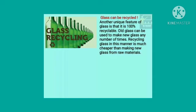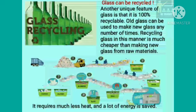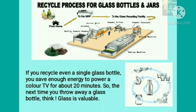Glass can be recycled. Another unique feature of glass is that it is 100% recyclable. Old glass can be used to make new glass any number of times. Recycling glass in this manner is much cheaper than making new glass from raw materials. In this picture you can see the procedure of recycling glass bottles and jars. If you recycle even a single glass bottle, you save enough energy to power a color TV for about 20 minutes. So the next time you throw away a glass bottle, think — glass is valuable.